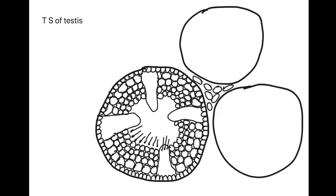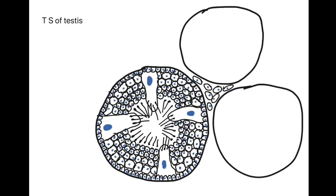Some of the sperms attach themselves to the Sertoli cells. This is how we complete the diagram. Now let us start labeling the diagram.